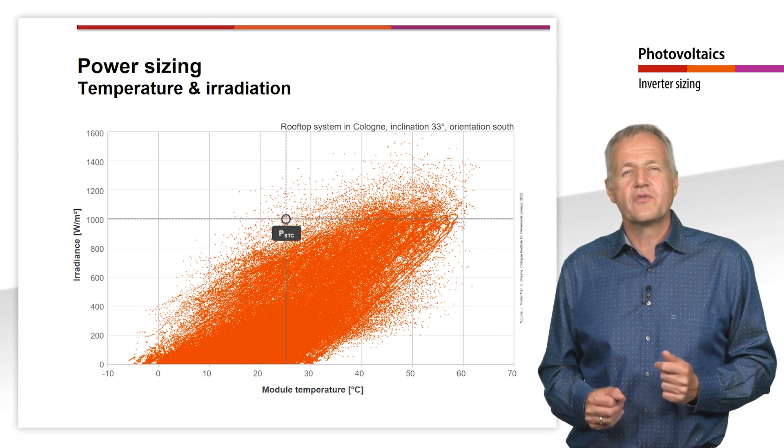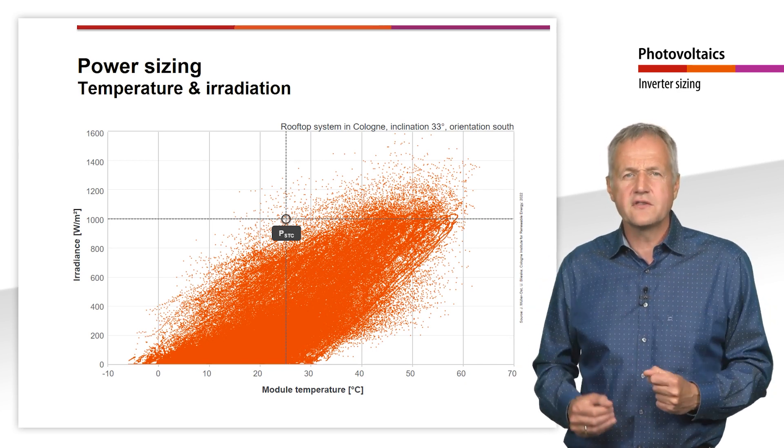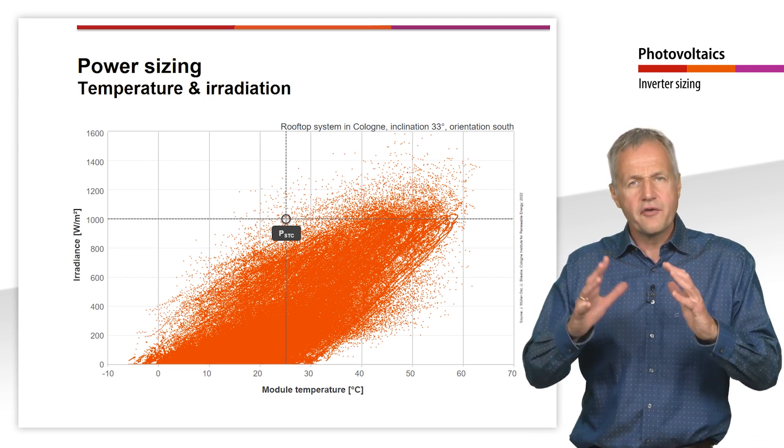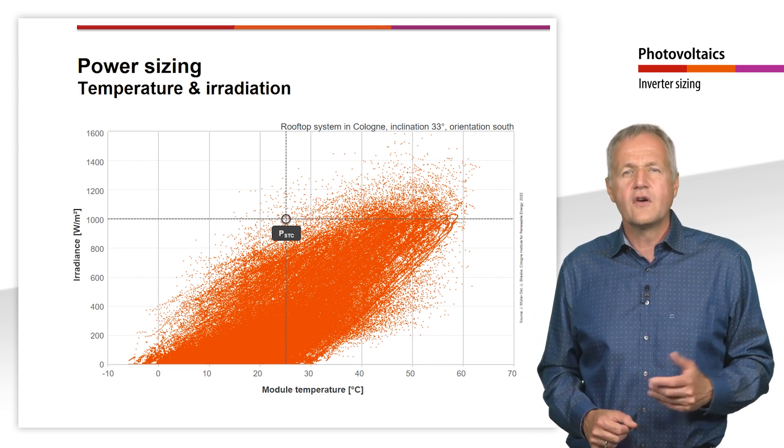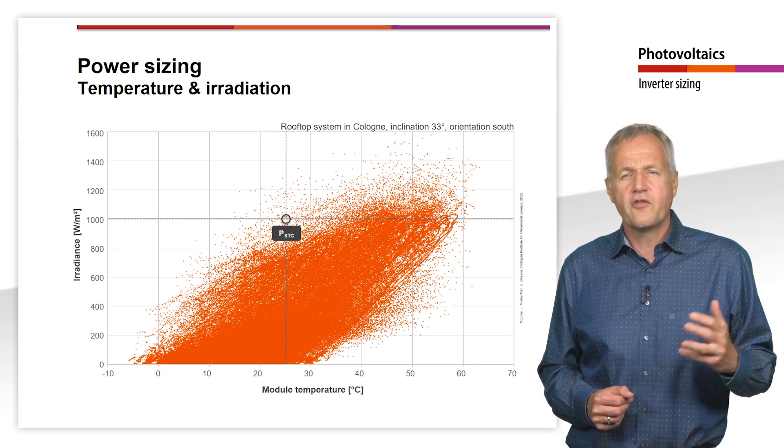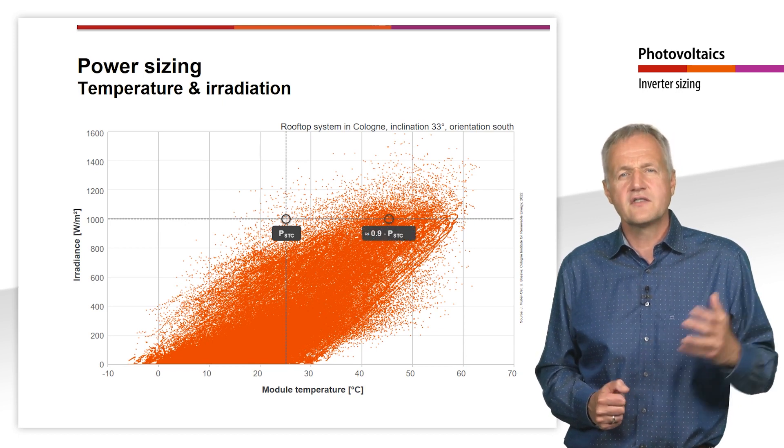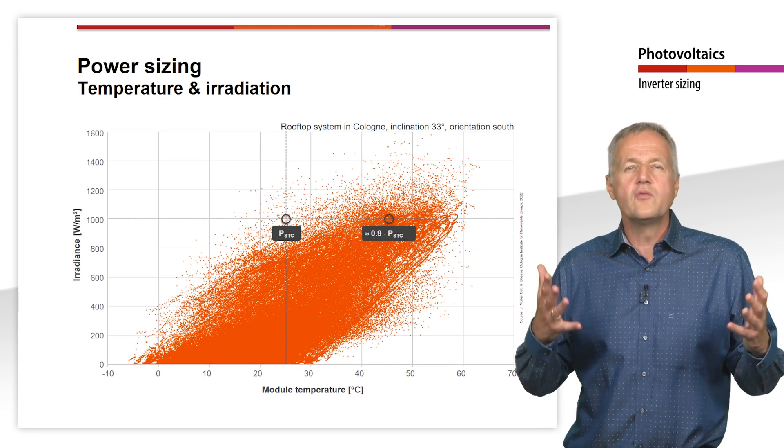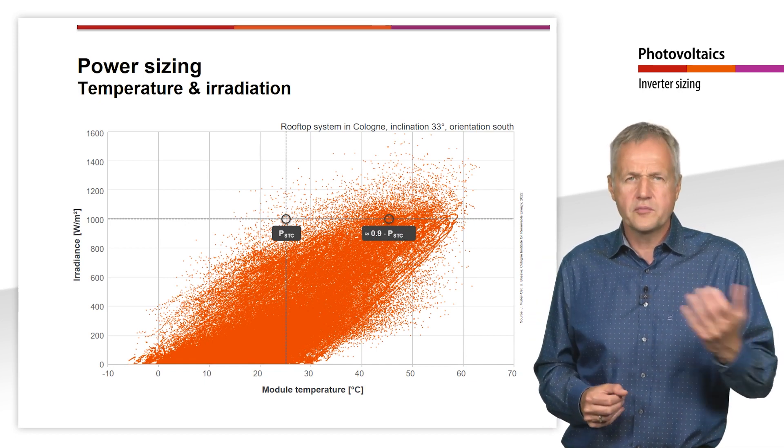When the temperature rises by 10 degrees Celsius, the output of an average silicon module decreases by around 5%. So, if the module temperature is at moderate 45 degrees Celsius instead of 25 degrees Celsius, we must already assume a 10% lower output.